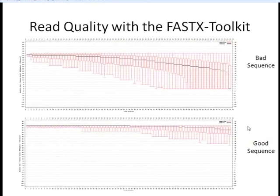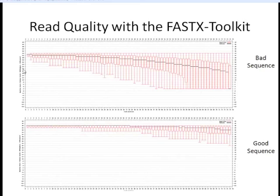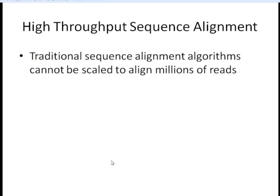Running these two commands gives us a box plot representing all of the reads within the library. Along one axis is each position of the read — these were 75 base pair reads — and on the other axis you have the Phred-like scores. This is the distribution of the quality score at each base position across all reads. Ideally, we want everything above a Phred score of 20. You can see this first example is a poor line of sequence where quality deteriorates very quickly. If we have something more like the bottom scenario, those are good reads.